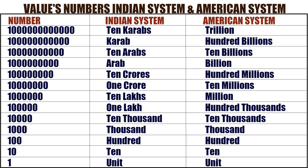One after 4 zeros: called as 10,000 in Indian system, 10,000 in American system. One after 3 zeros: called as 1 thousand in Indian system, 1 thousand in American system. One after 2 zeros: called as 100 in Indian system, 100 in American system. One after 1 zero: called as 10 in Indian system, 10 in American system. And 1 is called as unit in both Indian and American systems.